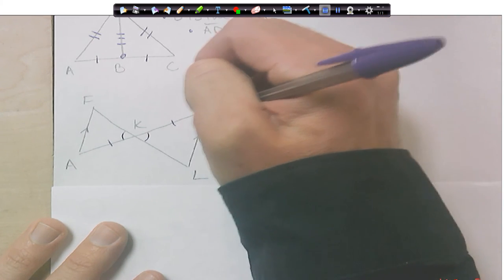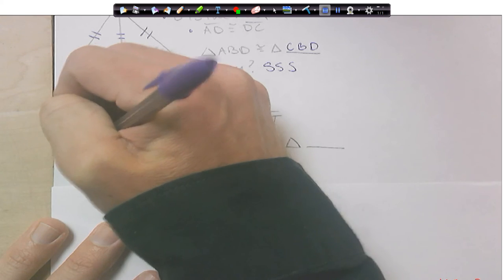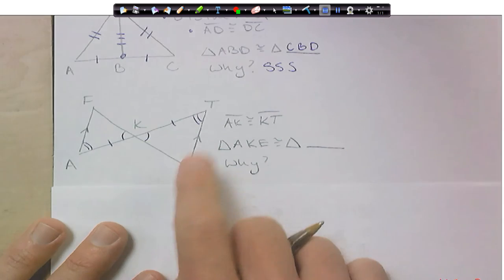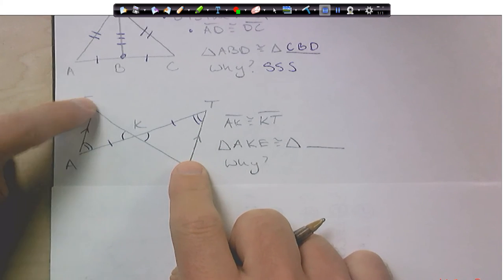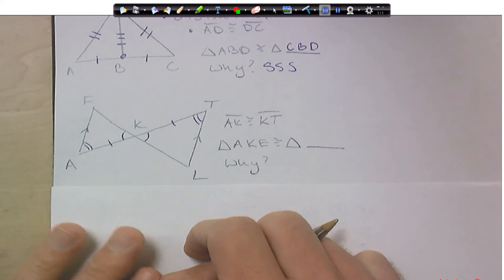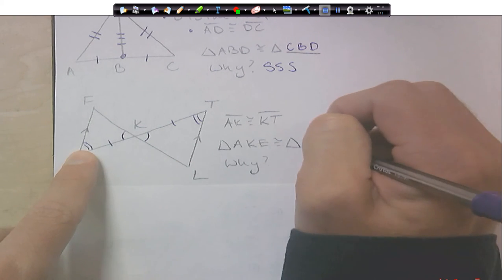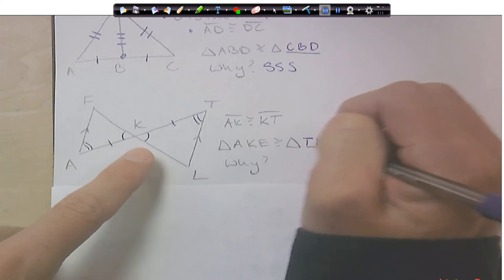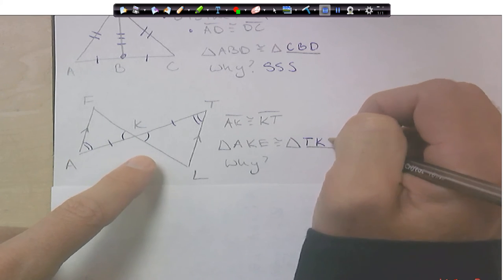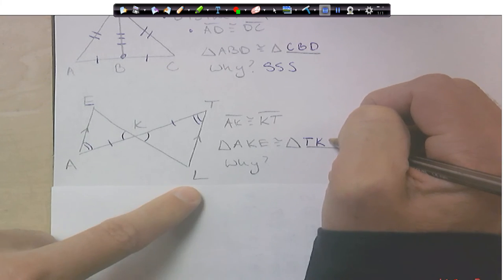I can show alternate interior angles here and get angle, side, angle. Or I could have put an angle here and here and got angle, angle, side. So two different options. Either way, A is going to be matching with T. K is going to match with K. And that's an E, I believe, I wrote up there. And E is going to match with L.